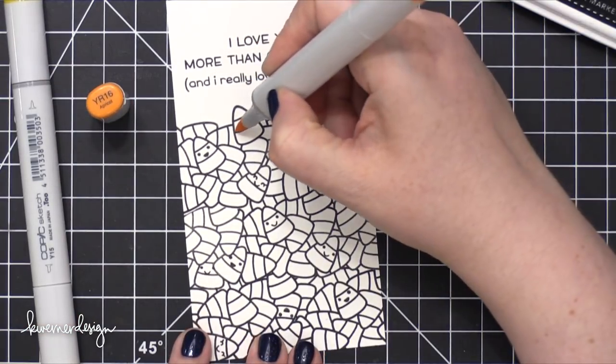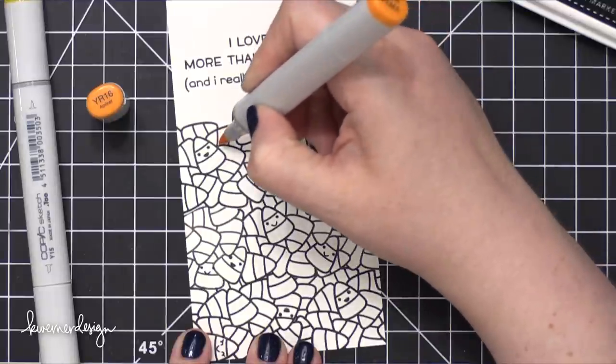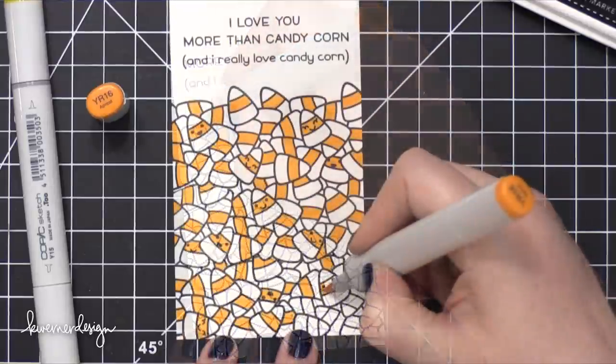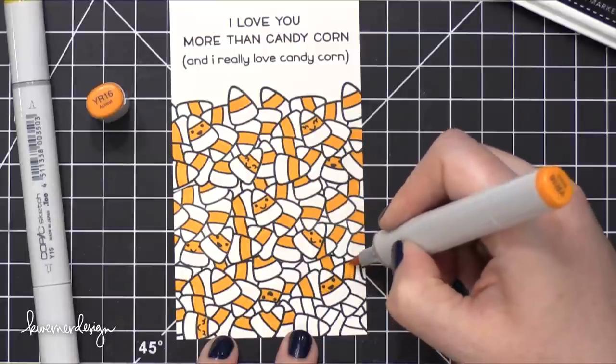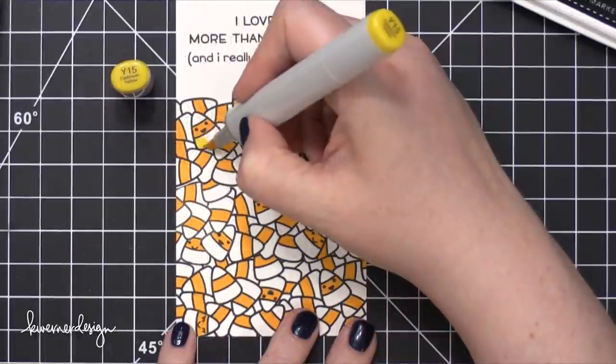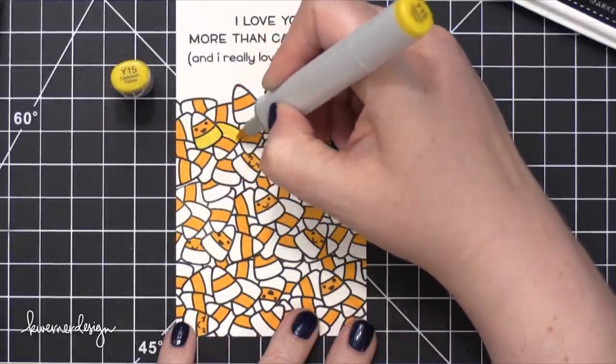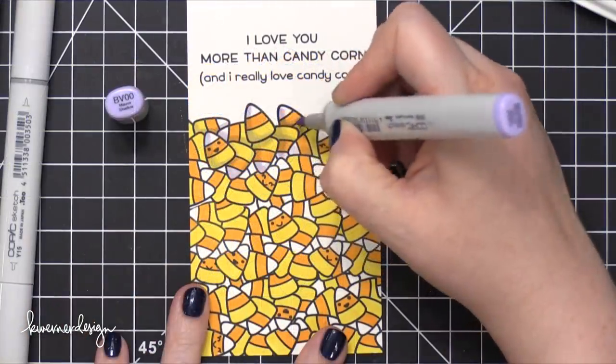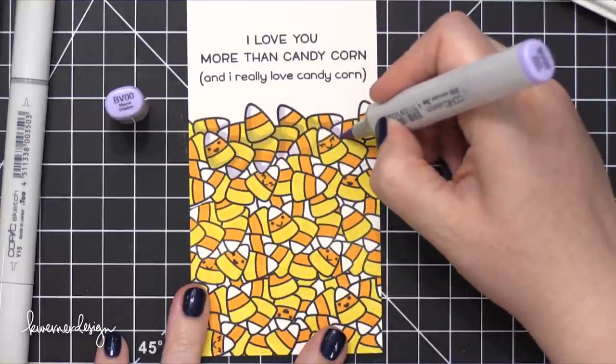So now I've got some Copic markers and I'm going to start coloring all of these candy corn. And don't worry, I'm not going to make you sit through all the coloring. I'm going to speed it up quite a bit and cut out a bunch. But at this point, it looks like a bunch of Finding Nemo clownfish to me, with all of the orange and white. And then you bring in the yellow and it starts to look like candy corn. And I thought at first that I would only use these colors really flat, and then just add a little bit of shadow with a BV00.